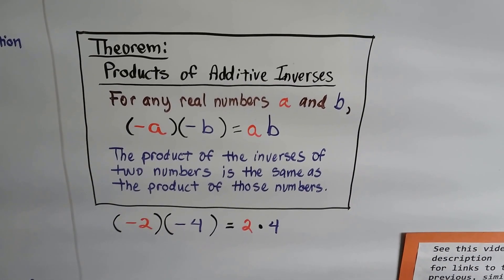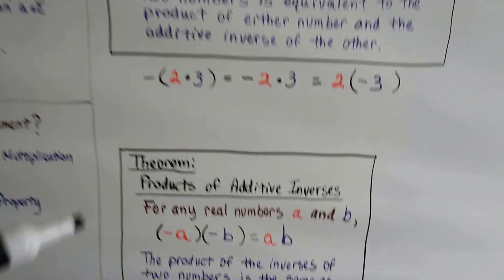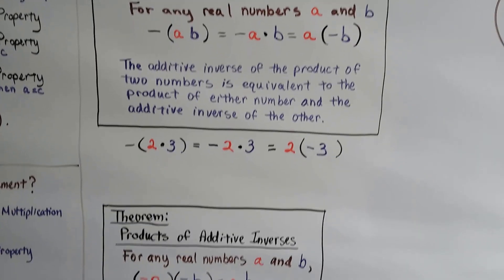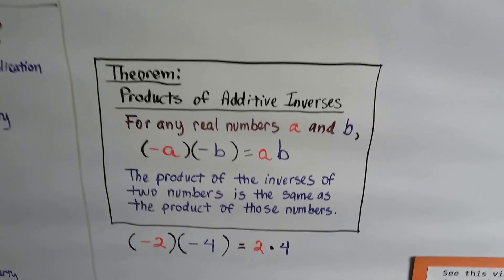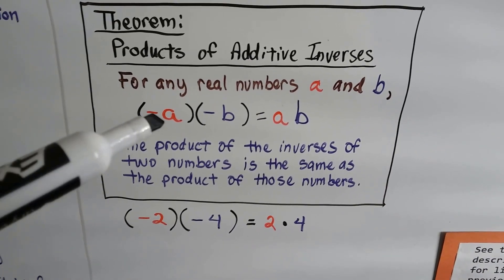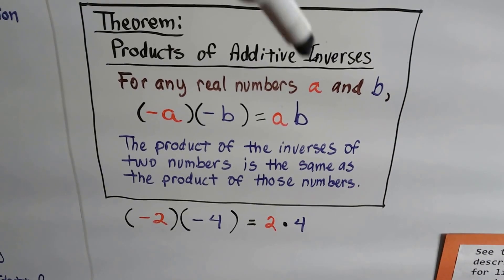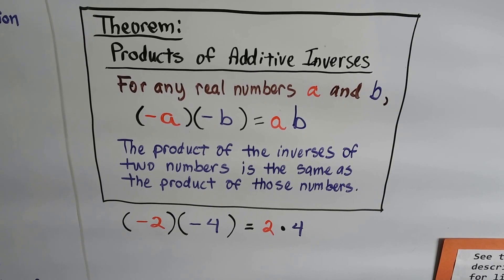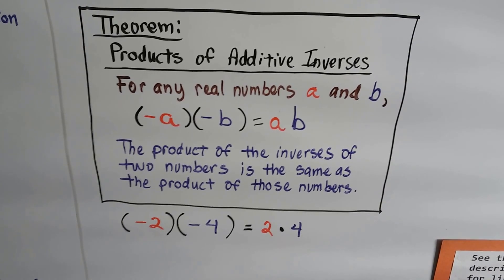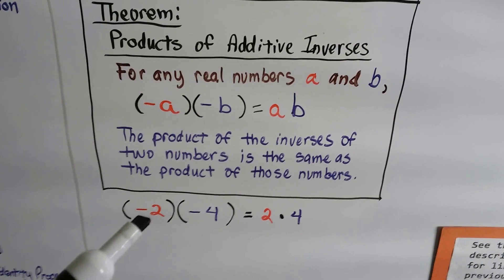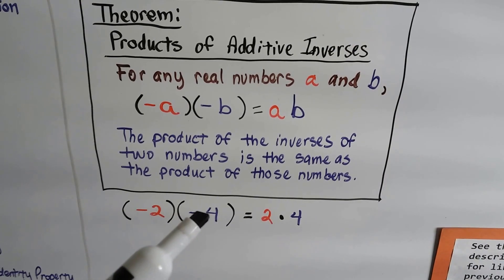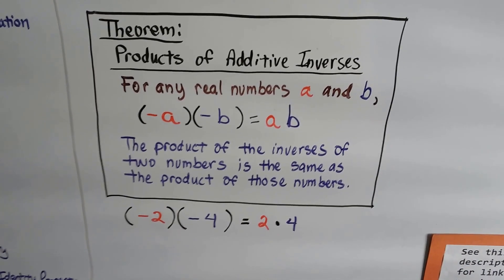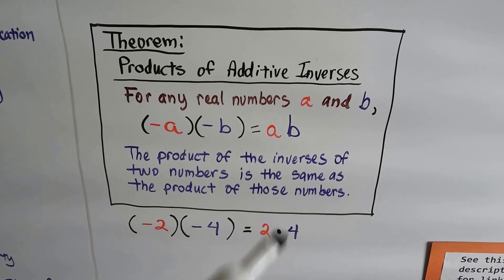Here's the last theorem — the products of additive inverses. The words got flipped around from the previous theorem. It says for any real numbers a and b, negative a times negative b equals positive a times b. The product of the inverses of two numbers is the same as the product of those numbers. For example, negative 2 times negative 4 equals 2 times 4, because two negatives make a positive.